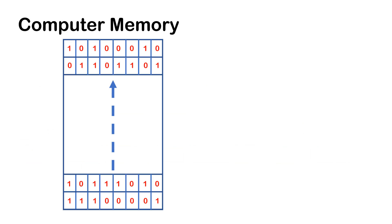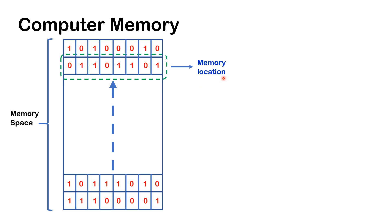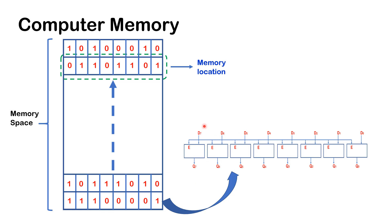Finally, let's look at computer memory. This block here represents the computer memory, or we could call it the memory space. In this memory space we have a collection or group of memory locations, and each memory location is capable of storing 8-bit information. Each memory location is made up of a collection or group of latches, as mentioned at the beginning of the video.